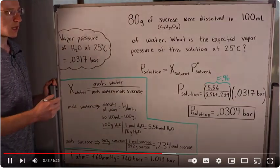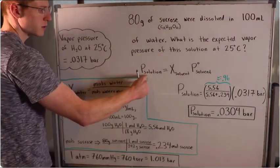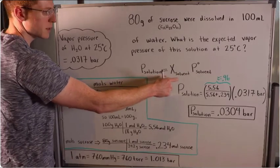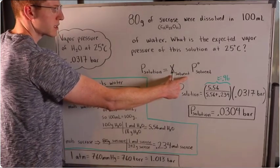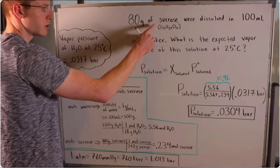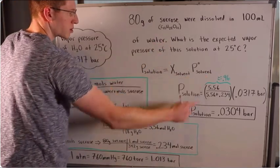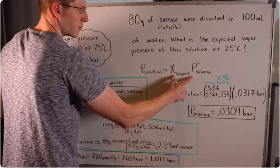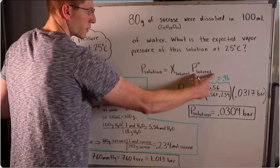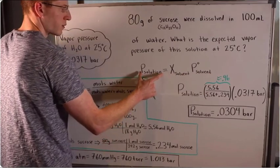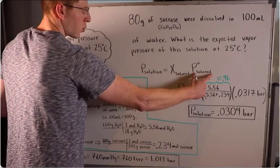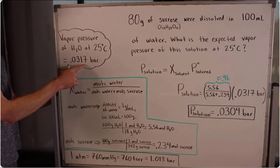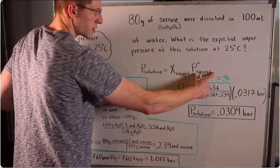To solve this problem, we use Raoult's Law: the vapor pressure of the overall solution equals the mole fraction of the solvent — water is our solvent, sucrose is our solute — multiplied by the vapor pressure of the pure solvent. We need the mole fraction of water and the vapor pressure of pure water. The vapor pressure of pure water at 25 degrees Celsius is 0.0317 bar, found from a reference table.